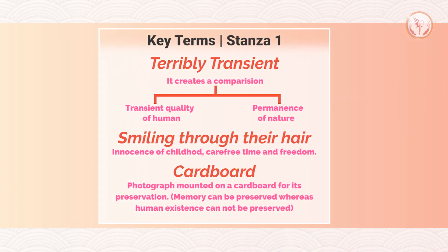The next phrase is 'smile through their hair'. The poet wrote this because they are all standing at a beach and it might be a windy day, so their hair is falling across their faces while they are posing for the photograph. Open hair here suggests freedom and the innocence of childhood, where the poet's mother is very carefree and has no tension about life.